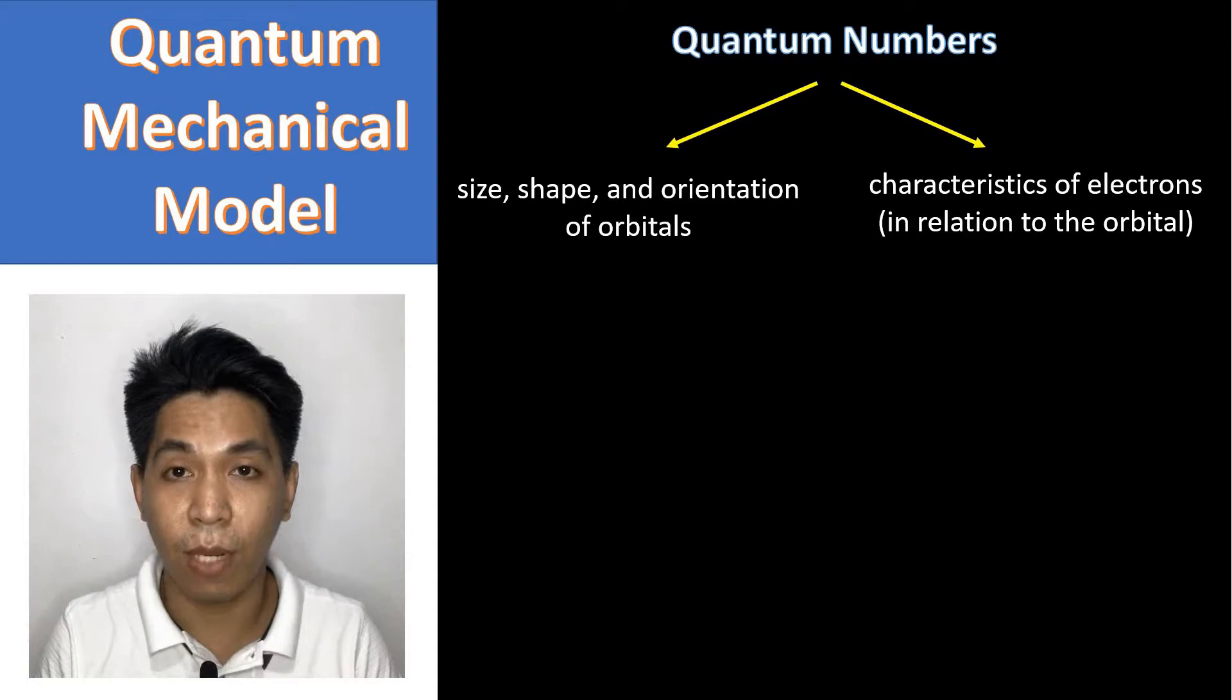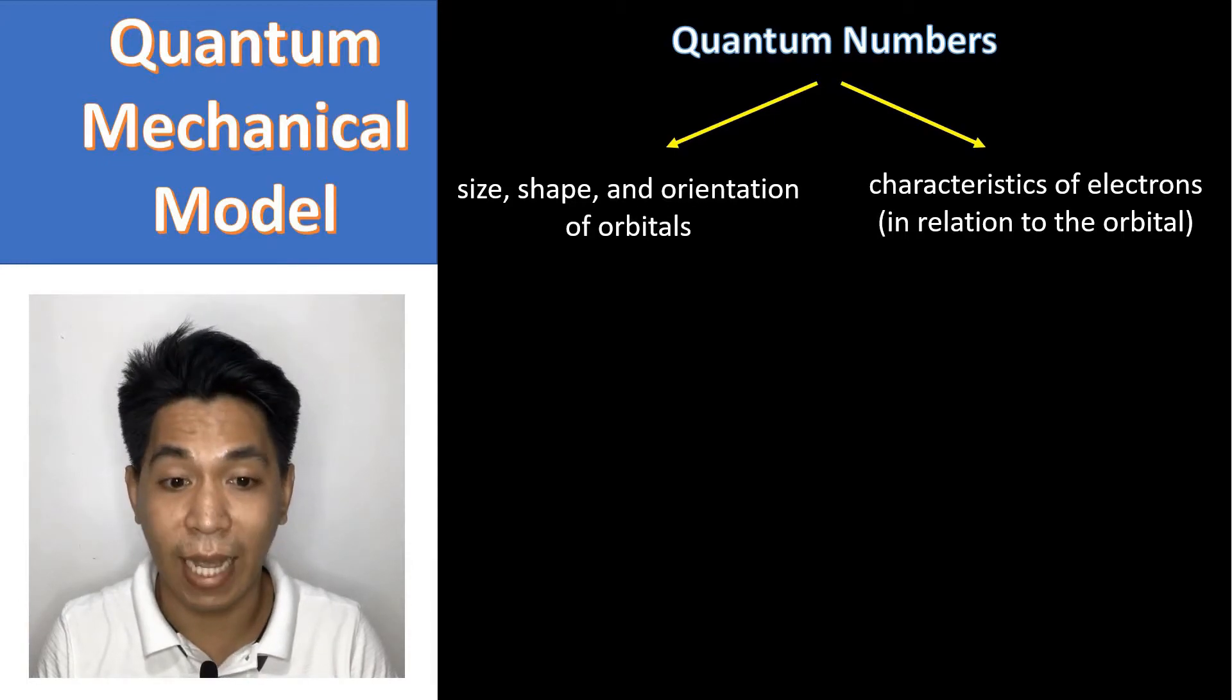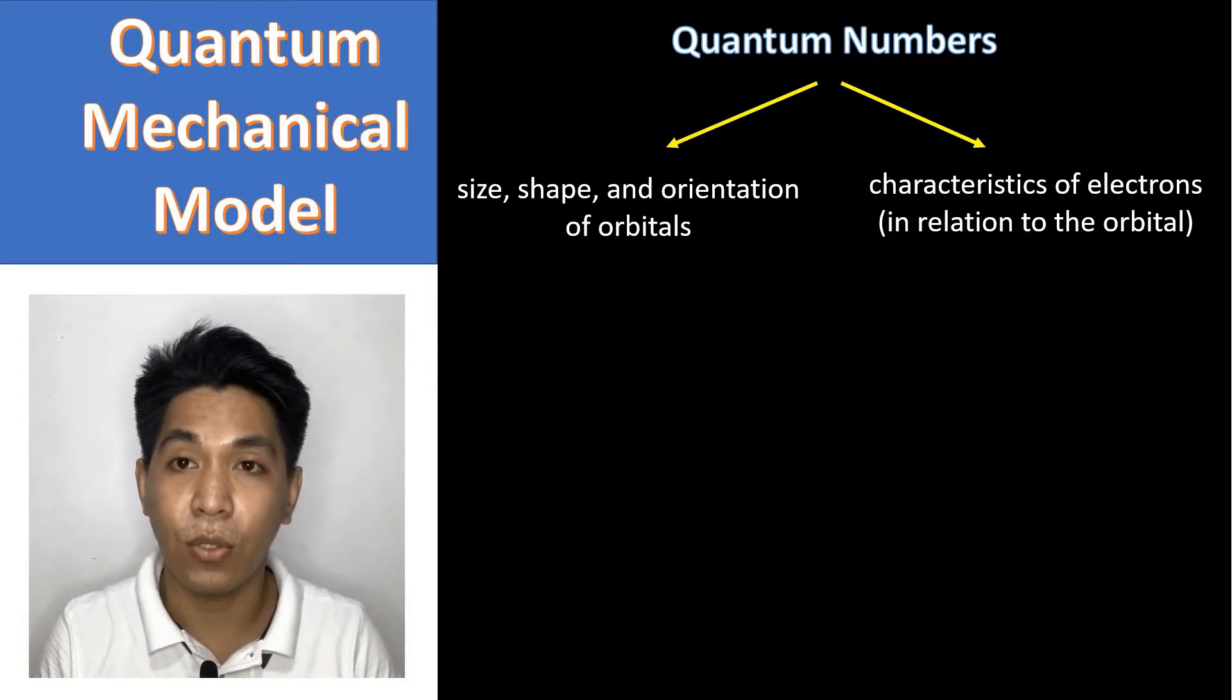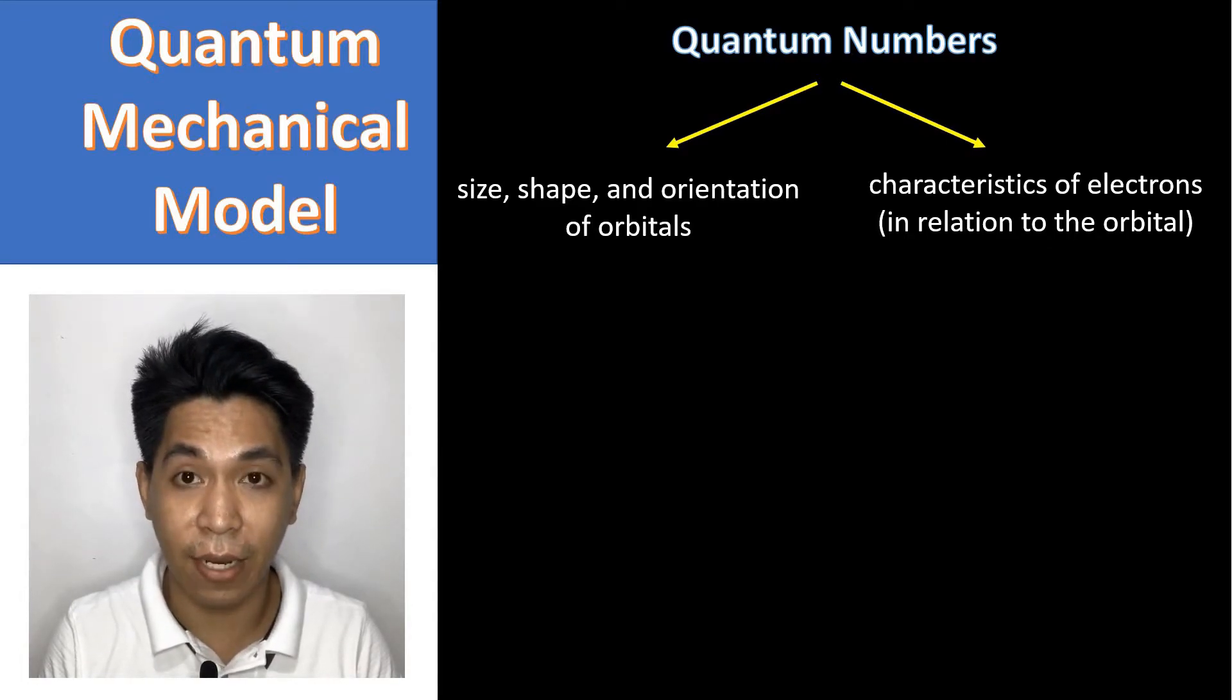Quantum numbers can be used to describe the size, the shape, and the orientation of orbitals. Likewise, quantum numbers can also be used to determine the characteristics of electrons in relation to the orbitals, such as their energy and the spin.